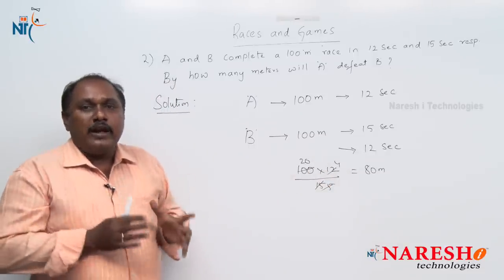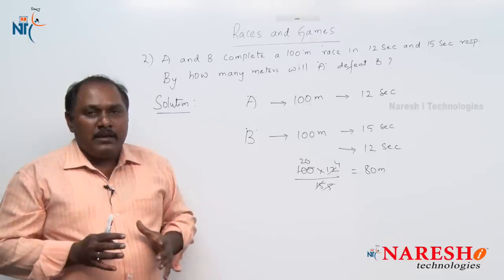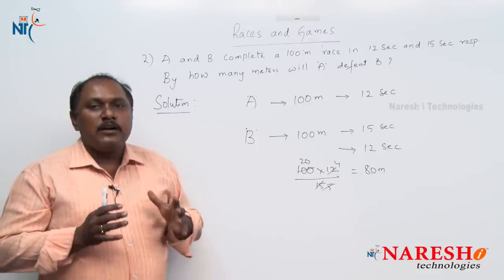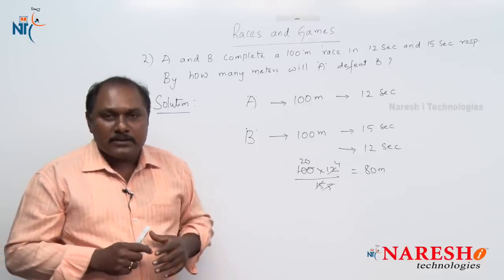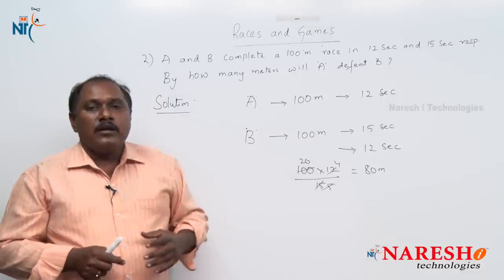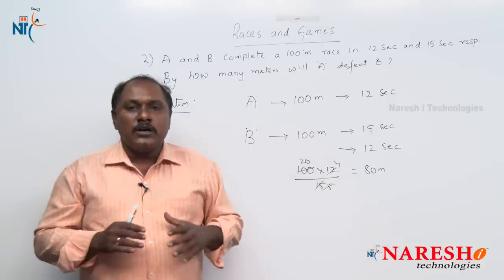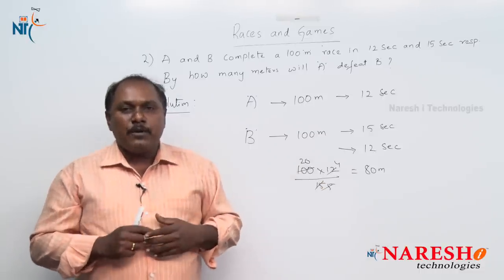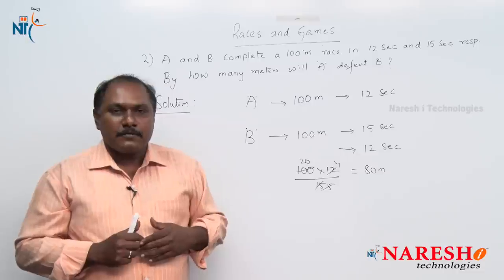A is completing his race of 100 meters in 12 seconds, but in the same 12 seconds B is running only 80 meters. So A defeats B by 20 meters. This is the solution for this problem. Let us go to the next problem in this chapter.